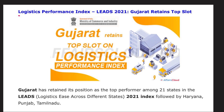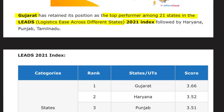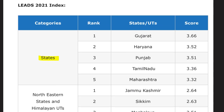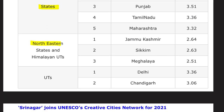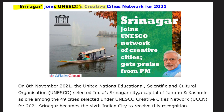In the Logistics Performance Index, Gujarat retained the top slot in the LEADS (Logistics Ease Across Different States) 2021 index. Gujarat topped among 21 states, followed by Haryana, Punjab, and Tamil Nadu. In the North Eastern and Himalayan states and Union Territories category, it was topped by Jammu and Kashmir. Among Union Territories, Delhi topped.